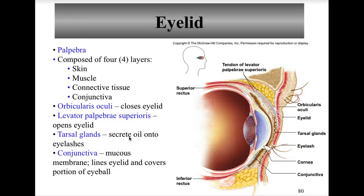Looking at the visual accessory organs, the first being eyelids. The eyelids are protective shields for the eyeball. They have the conjunctiva, which is an inner lining of the eyelid and is the red portion around the eye. The eyelid is composed of four layers: the skin, muscle, connective tissue, and the conjunctiva.